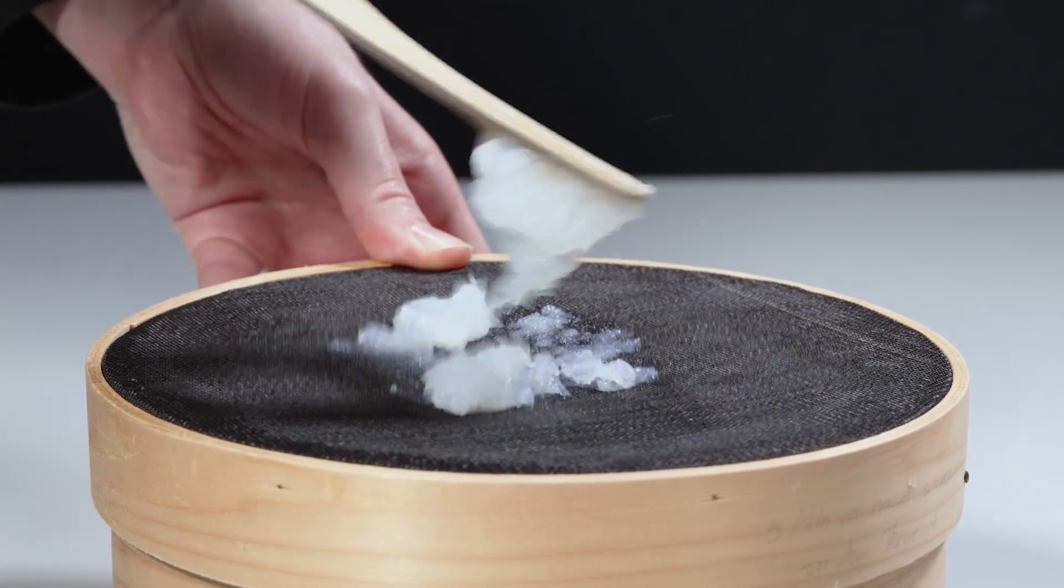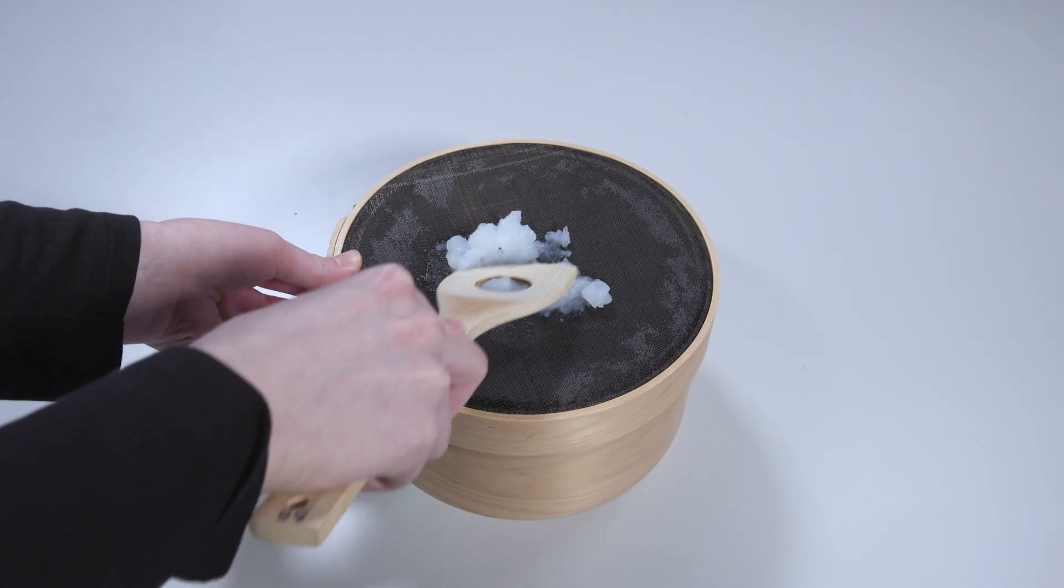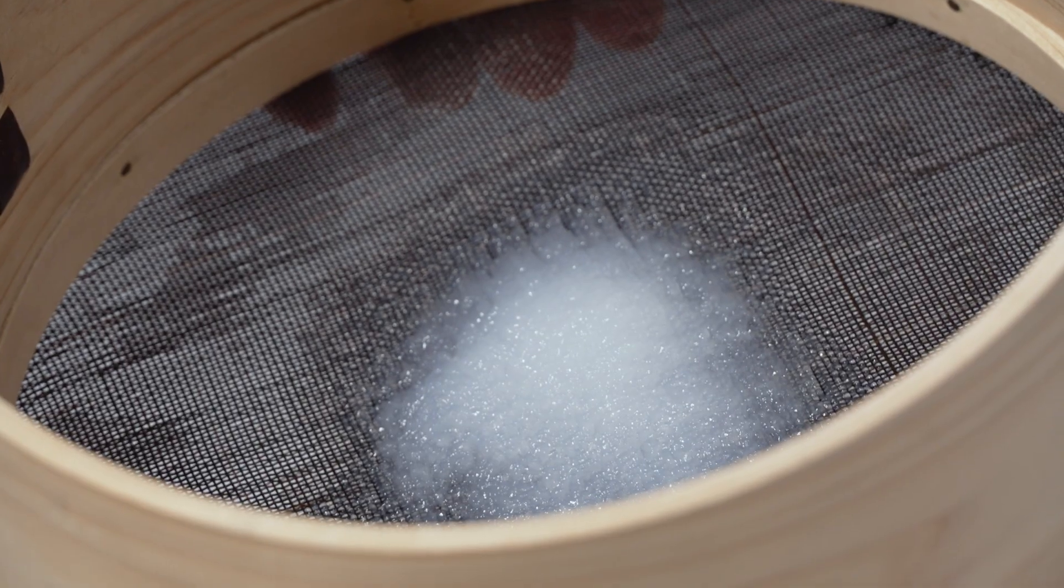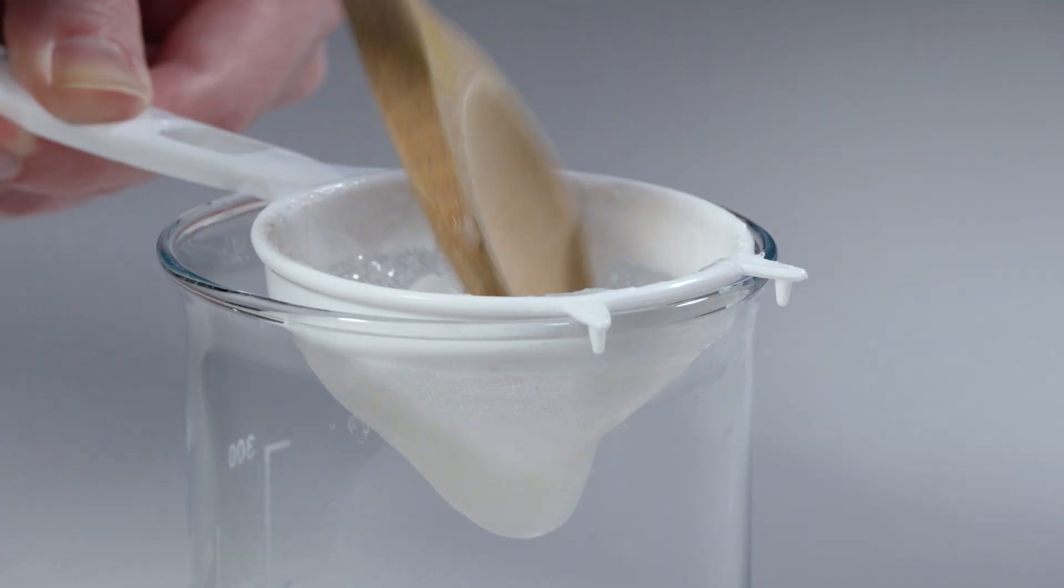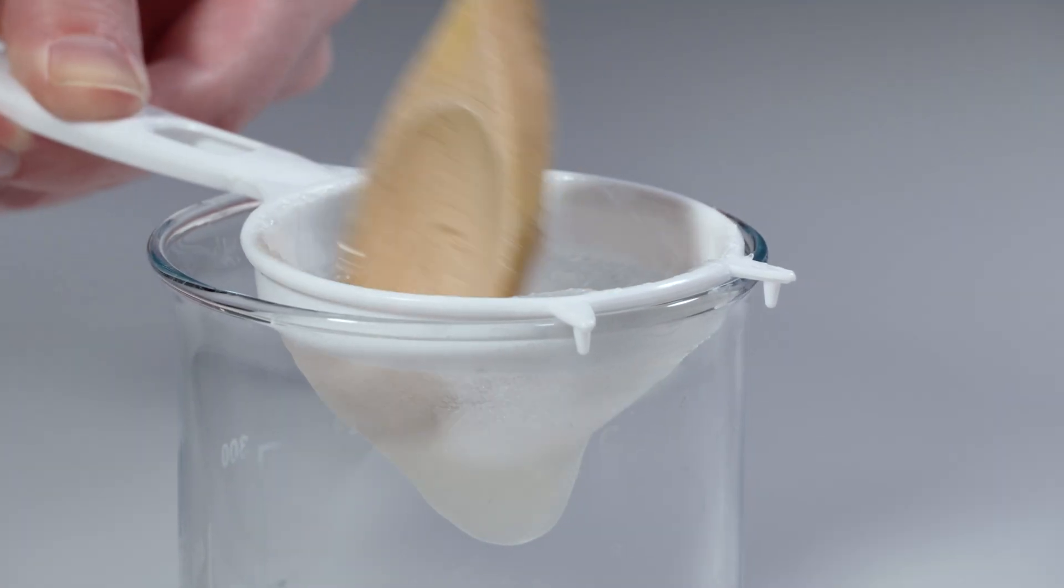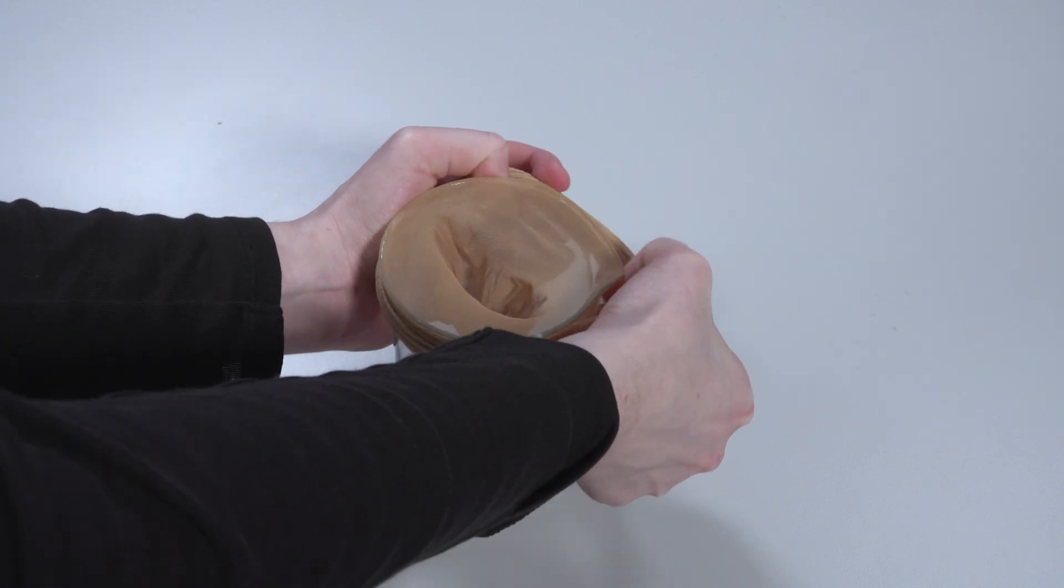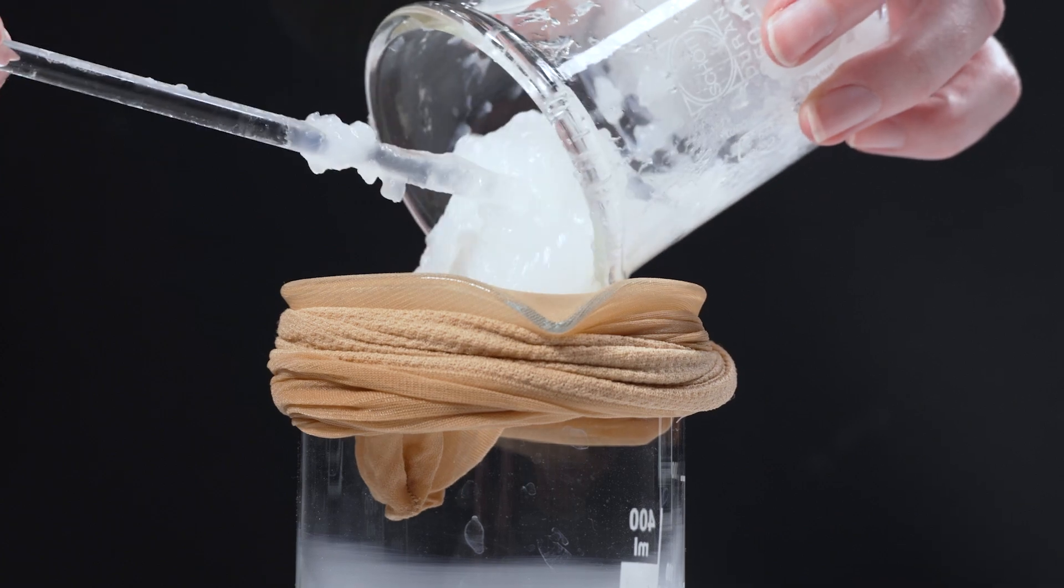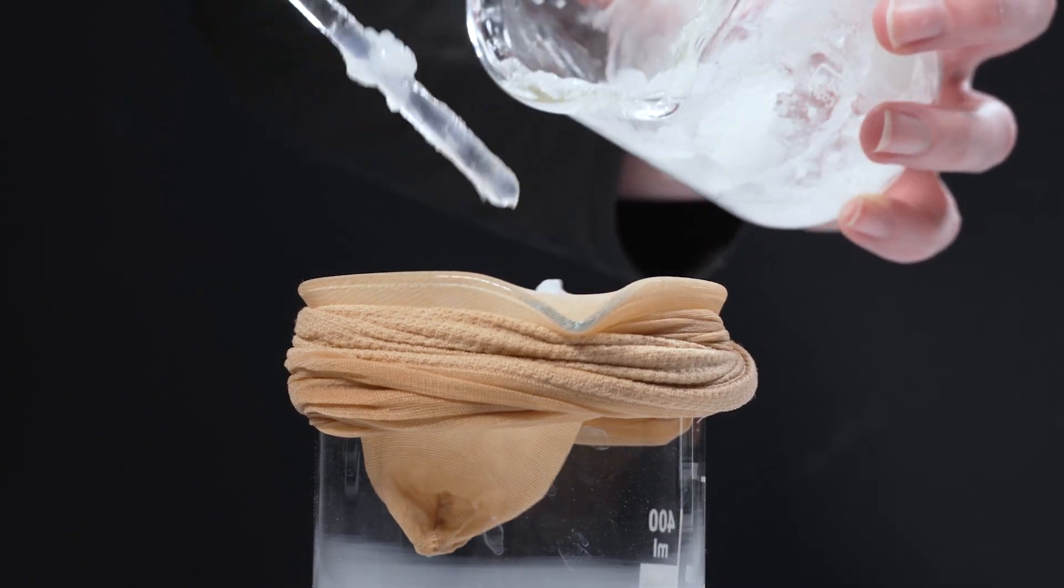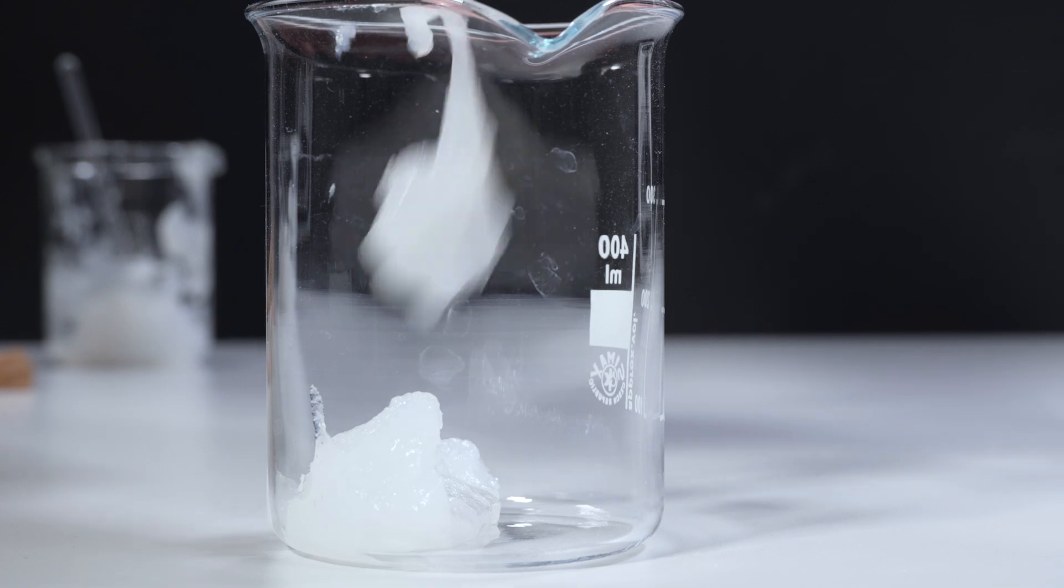To reach a spreadable and lump-free consistency, the paste is pushed through a fine sieve at least once. Either a traditional horsehair sieve or a tea strainer can be used. Thin nylon stockings can also be used as an inexpensive alternative to horsehair sieves. The stocking is rolled up and placed over a beaker. The paste is filled into the stocking and pressed through it.